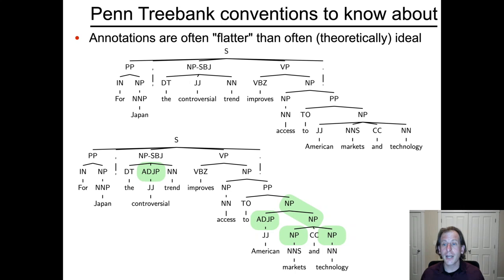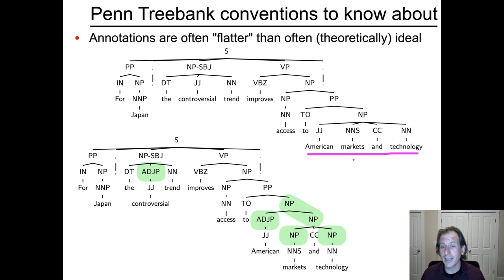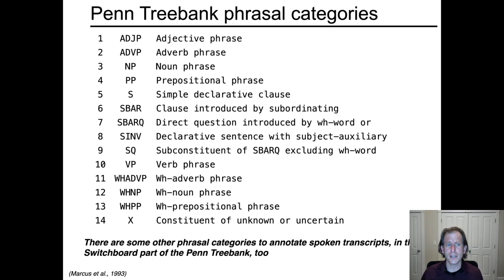Likewise, with coordinations, the structure doesn't tell you whether it's just 'markets' or 'technologies' that is 'American.' If you wanted to be more consistent, you'd also notice that each noun position could have an entire noun phrase, and you might add noun phrase and adjective phrase annotations. That's often just left out of the Penn Treebank. Nevertheless, there's a lot of information in there that's extremely useful.